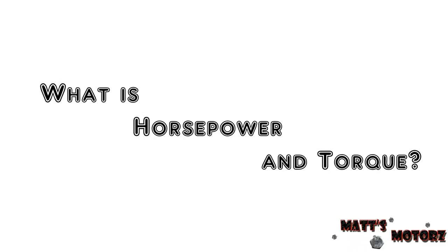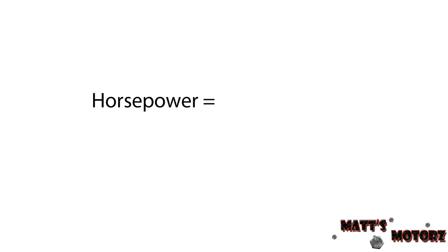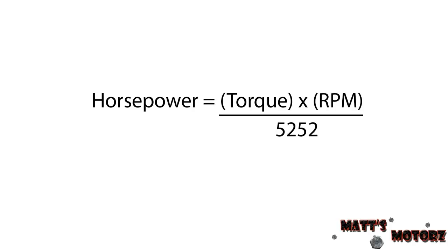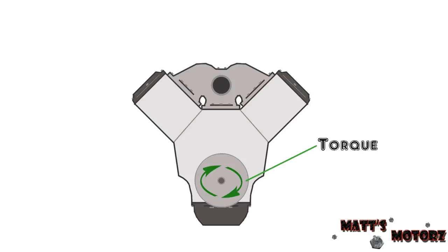In this video, I'm going to explain what horsepower and torque are. Let's start with the equation: horsepower equals torque times RPM divided by 5252.